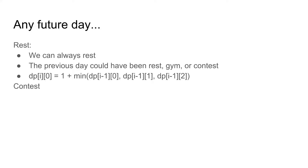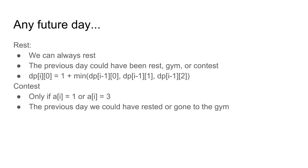The next option is to do a contest. We can only do a contest if a[i] equals 1 or a[i] equals 3. If we are doing a contest, the previous day could have been rest or gym — not contest. So dp[i][1] = min(dp[i-1][0], dp[i-1][2]). We do not add 1 because we are not resting on the current day, so the rest count does not increase.